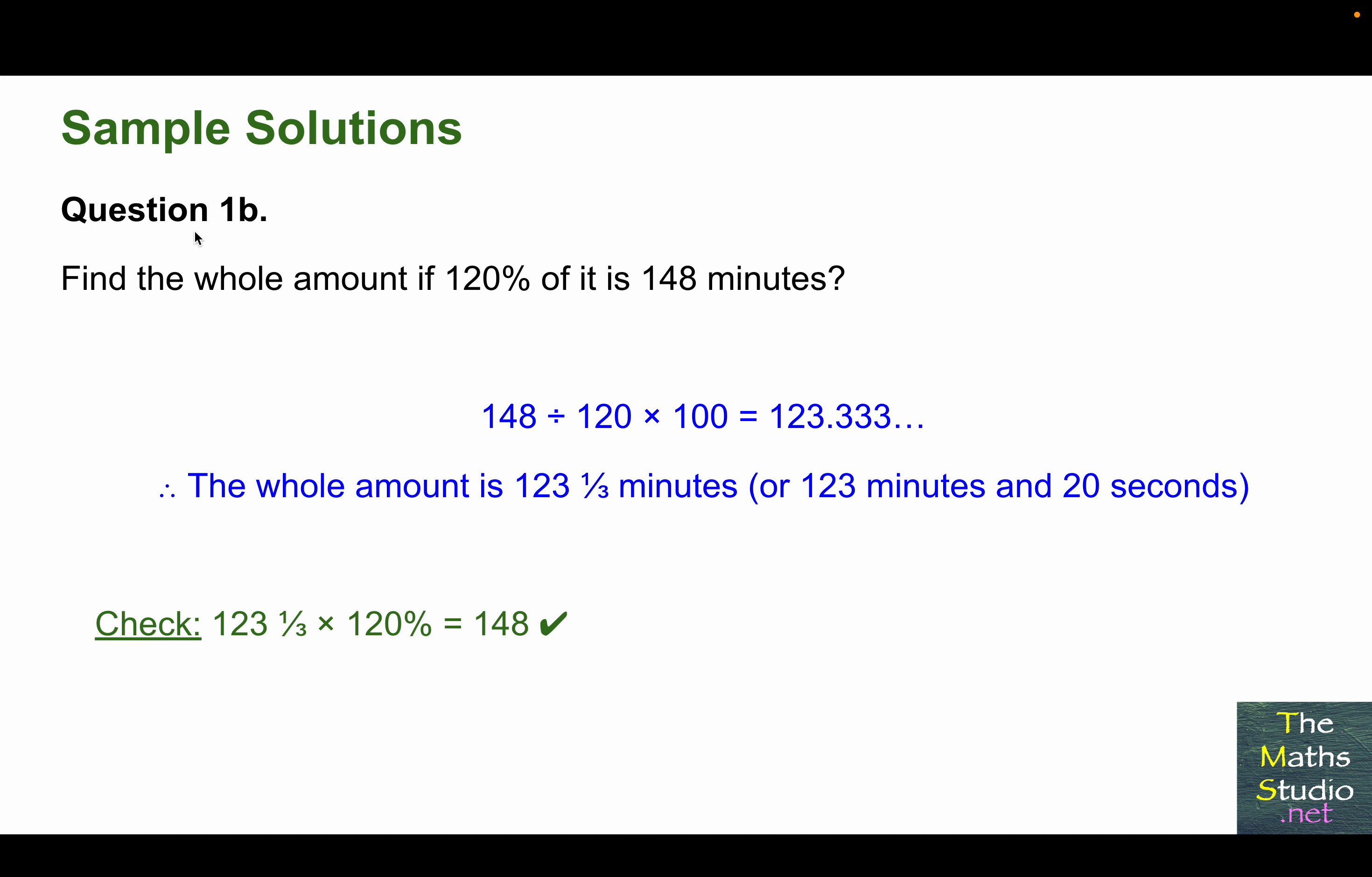Question 1, part B. Find the whole amount if 120% of it is 148 minutes. So starting off with 148, divide that by 120, multiply that by 100, and we get 123.3 recurring. And that's equivalent to 123 and 1 third. Therefore, the whole amount is 123 and 1 third minutes, or in minutes and seconds, that's 123 minutes and 20 seconds, since 20 seconds is 1 third of a minute.